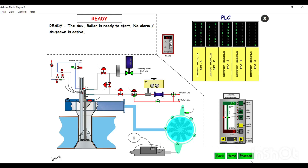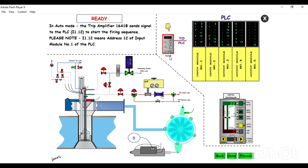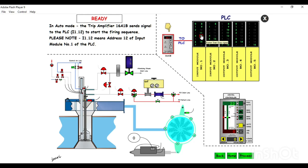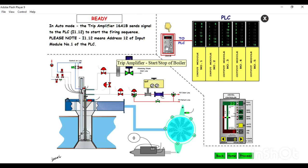The boiler is in start condition, kept in auto mode with no alarm and shutdown present. The trip amplifier has a set point - once the steam pressure reaches that value it will send a start signal to the PLC. From the trip amplifier, the start signal goes to input number 12 of the PLC, which is for the burner start and stop signal. Once received, the start sequence is initiated.